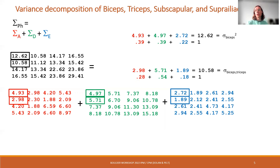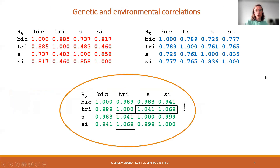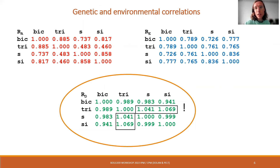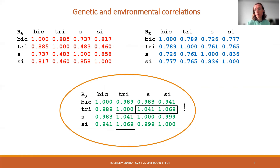Keep in mind that expressing variance components as a percentage is not the same as genetic or environmental correlations. The genetic correlations express the extent to which the genetic factors underlying one trait overlap with the genetic factors underlying the other traits — to what extent the genetic factors are the same. Similarly, the environmental correlations express the extent to which environmental factors for different traits overlap. Connor showed how to arrive at these values in terms of parametrization of the model in the previous videos.